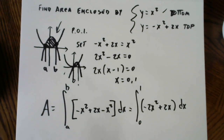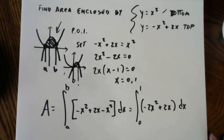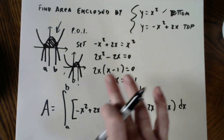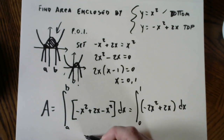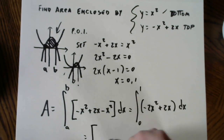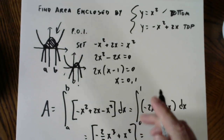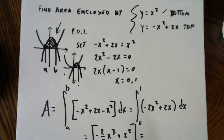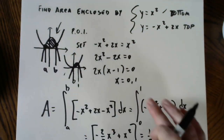The setup is everything — if this is a 10 or 15 point problem and you get to here, you have most of the points. The integration is straightforward: antiderivative gives negative two-thirds x cubed plus x squared. The zero plugs out; plugging in 1 gives one-third. That seems very reasonable for the scale of a region between 0 and 1 — if I'd gotten 20, I'd be worried.